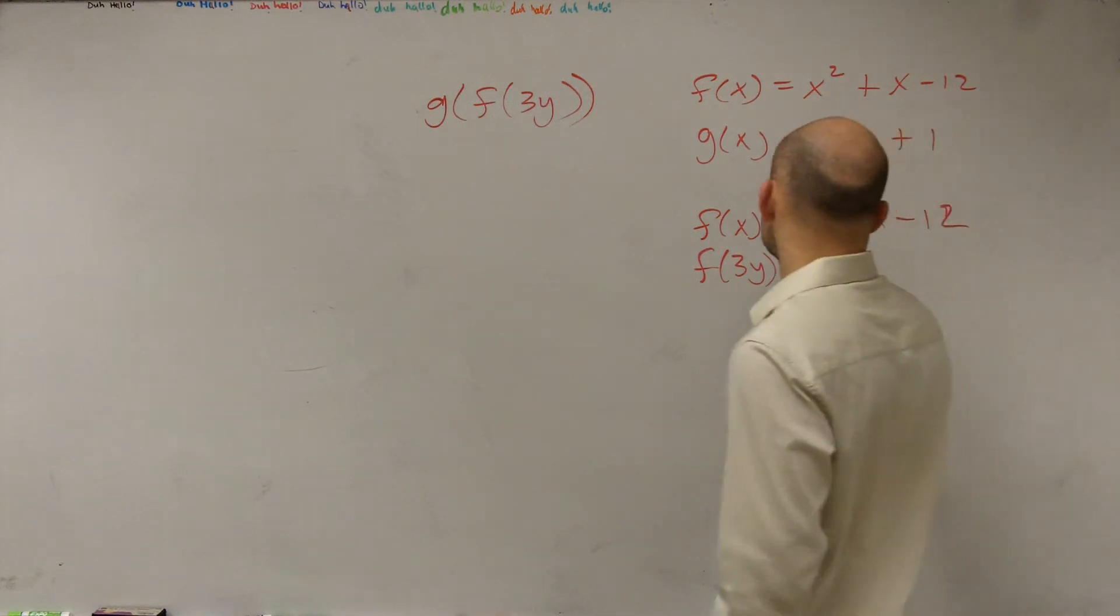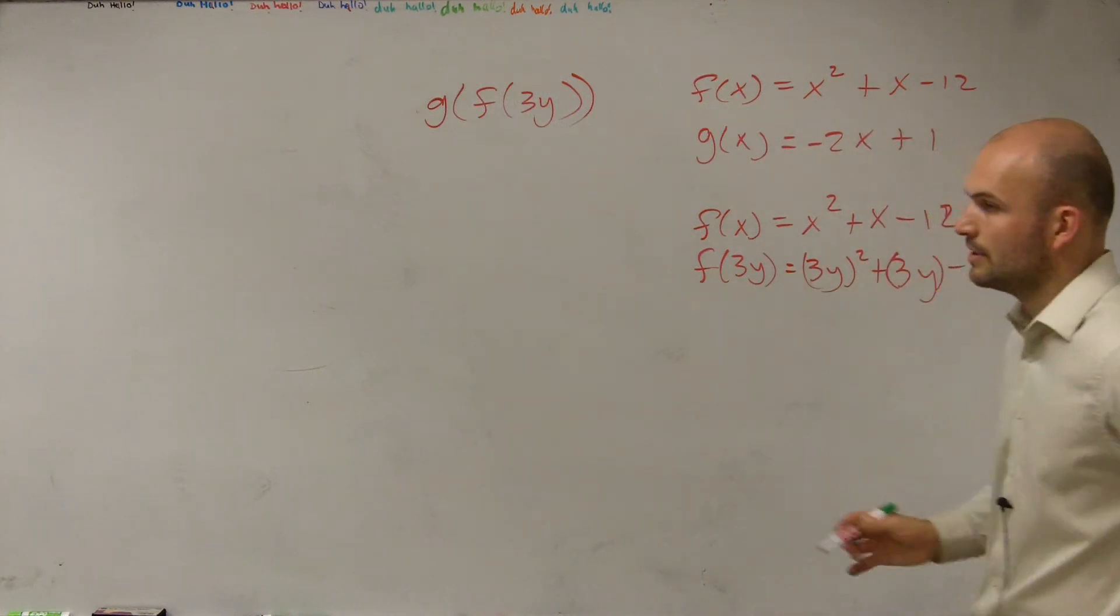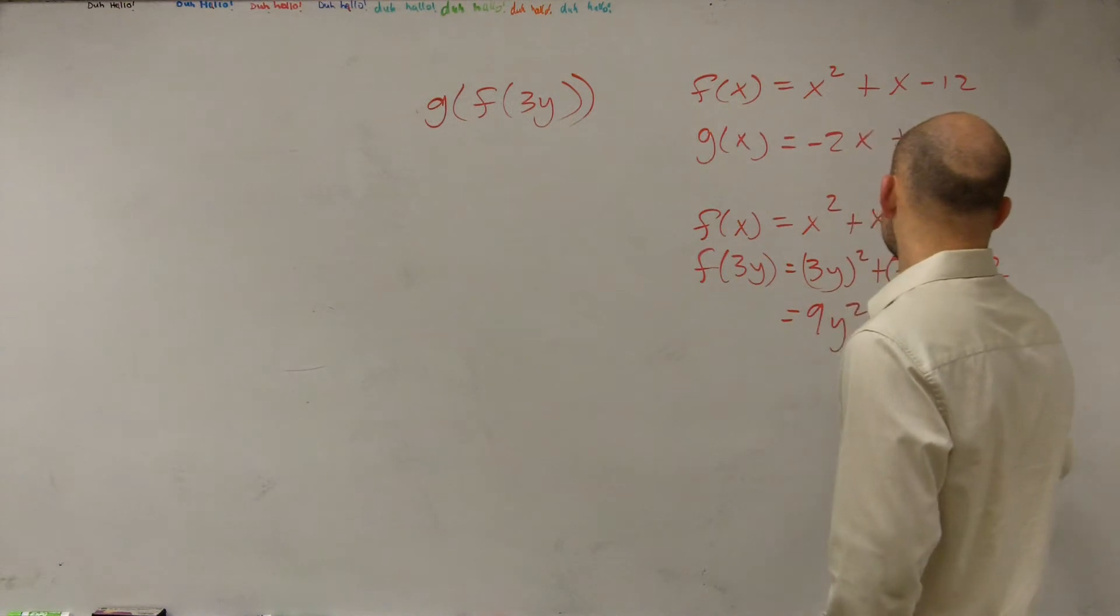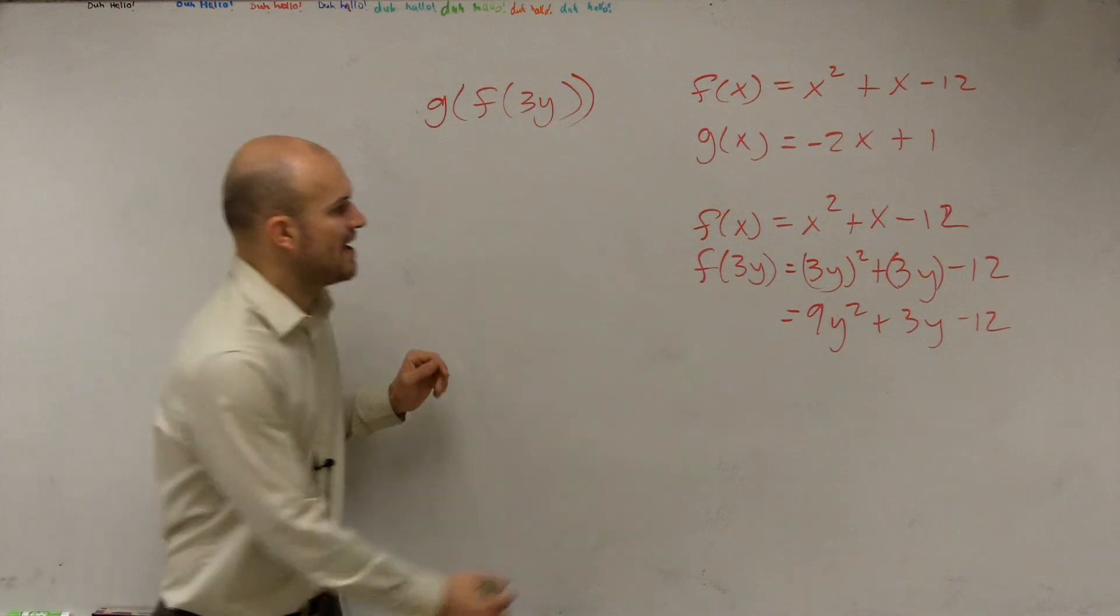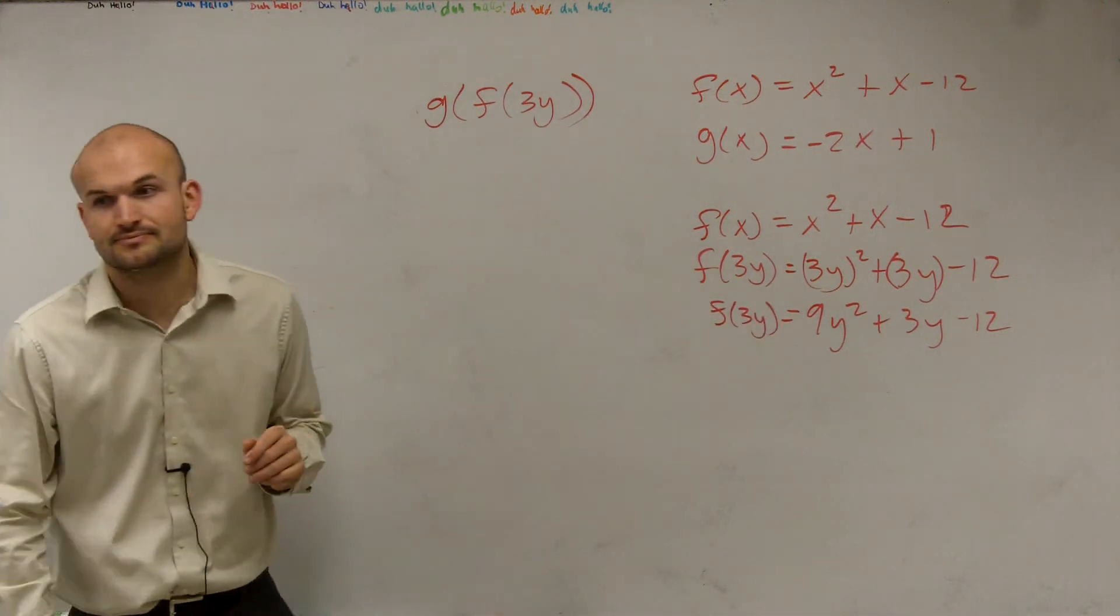So, what I'm going to do is now say 3y squared plus 3y minus 12. 3y squared is equal to 9y squared plus 3y minus 12. Now, we know that that is what f of 3y equals. Does that make sense?